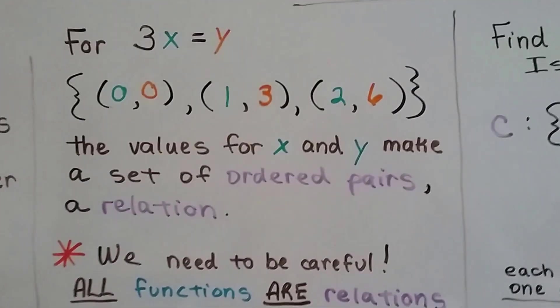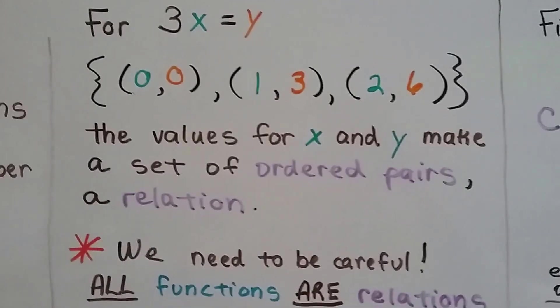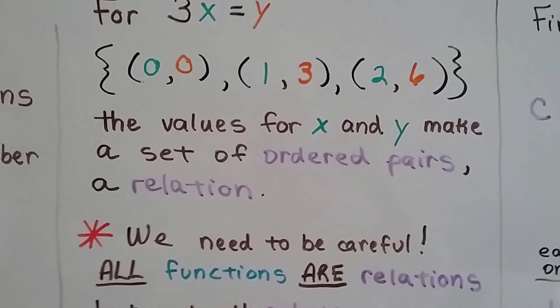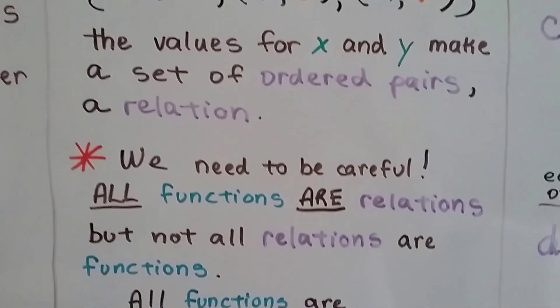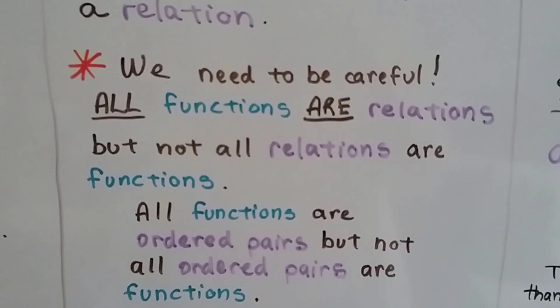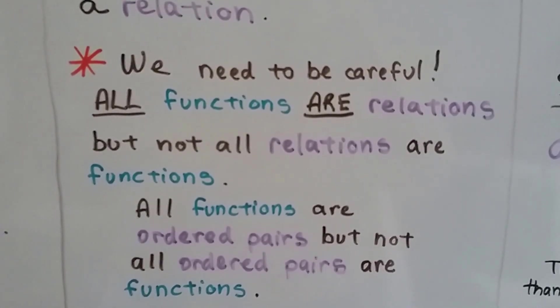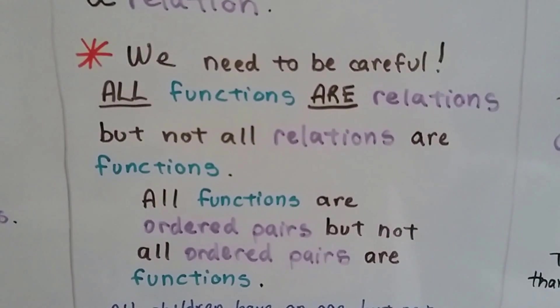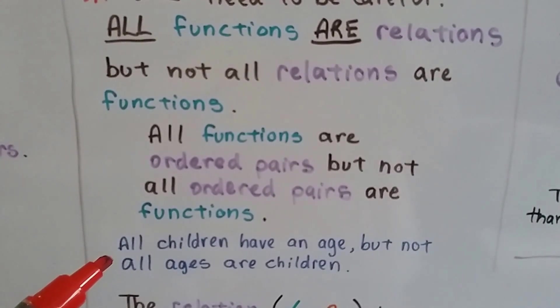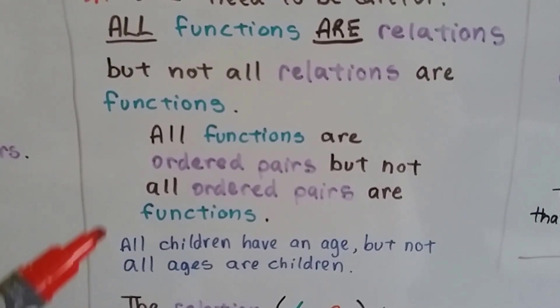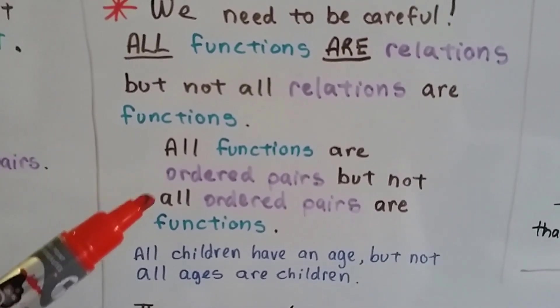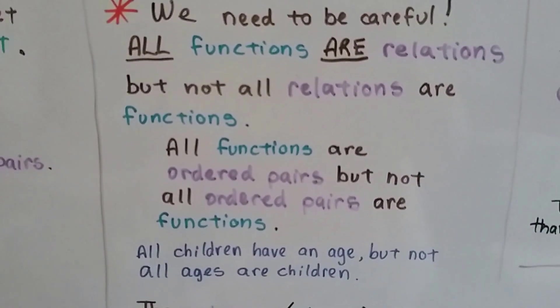So for the 3x equals y, these were the values that made that true. And the values for x and y make a set of ordered pairs, a relation. But we need to be careful because all functions are relations, but not all relations are functions. That means all functions are ordered pairs, but not all ordered pairs are functions. It's like saying all children have an age, but not all ages are children. Just because it's one doesn't mean it's another. All dogs are animals, but not all animals are dogs. So it could be true going one way, but not the reverse way.